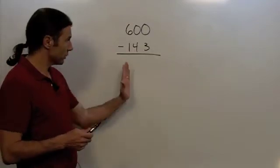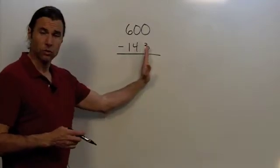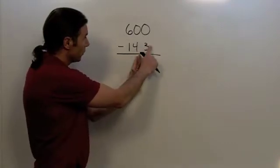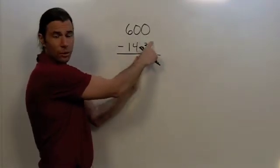To subtract, I'm always going to start at the smallest place value. So the first thing I would try to do is say, okay, 3 from 0. Well, I can't take 3 away from 0.